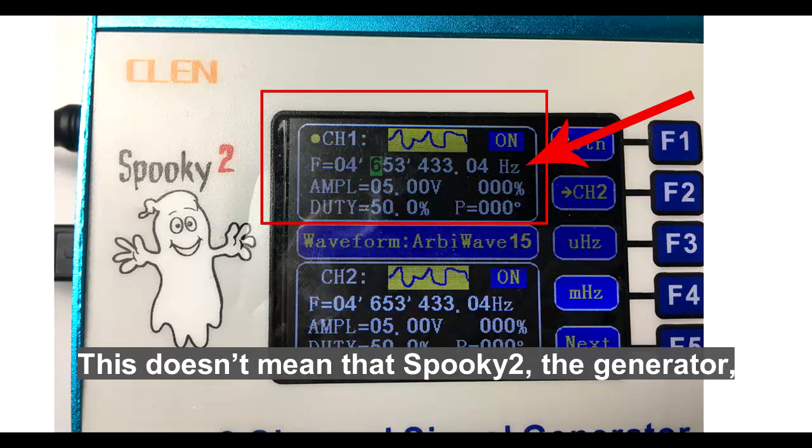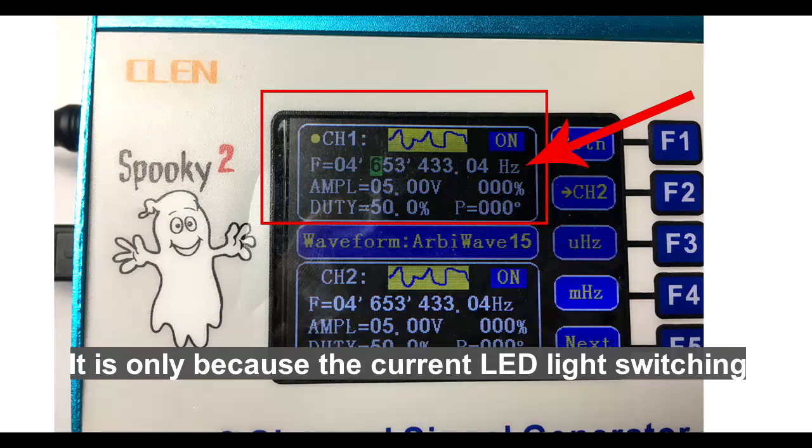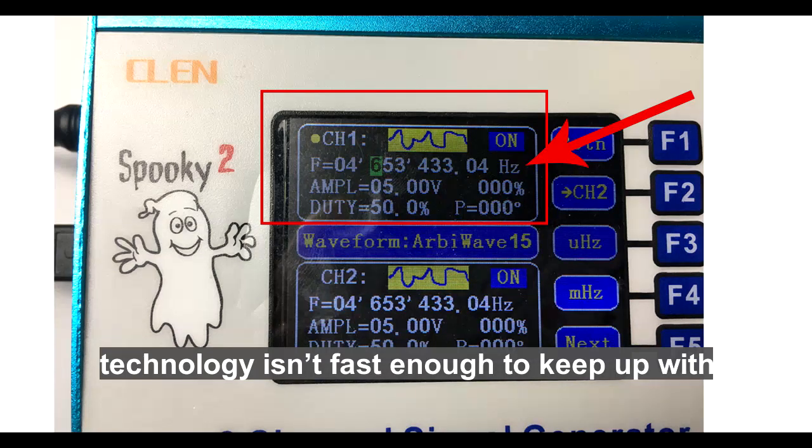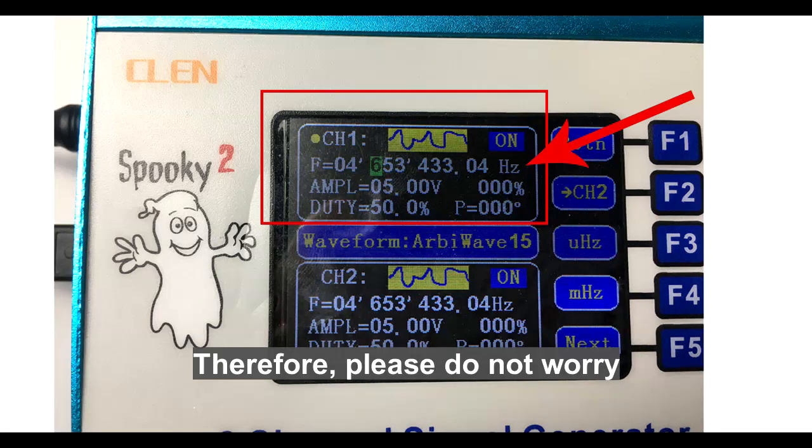This doesn't mean that Spooky2 generator or the remote is not working properly. It is only because the current LED light switching technology isn't fast enough to keep up with the speed of the extremely fast signal.